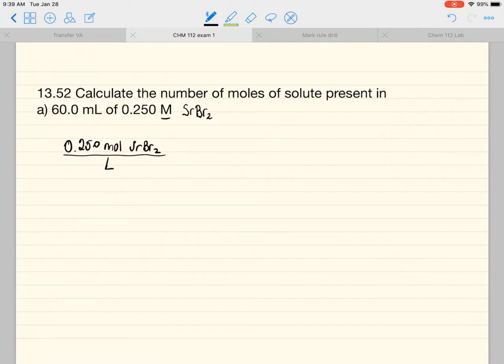And so that's a conversion factor that we can use to multiply by the liters that we have. So divide this by 1,000, and we get 0.0600 liters. And if we multiply the molarity times the liters, we will get moles. It's a useful thing to remember.